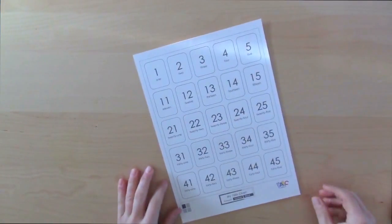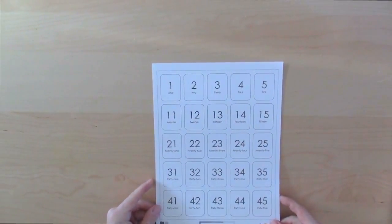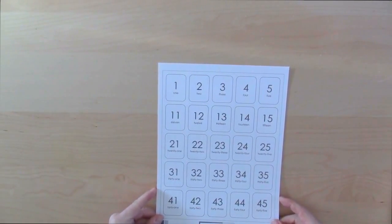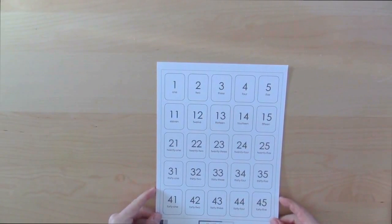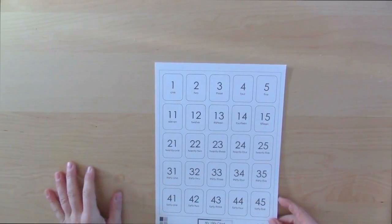Okay, so here is one of four cards that I have for the individual number, symbol, and word cards for the hundreds chart. And I'm going to demonstrate just cutting out these cards.